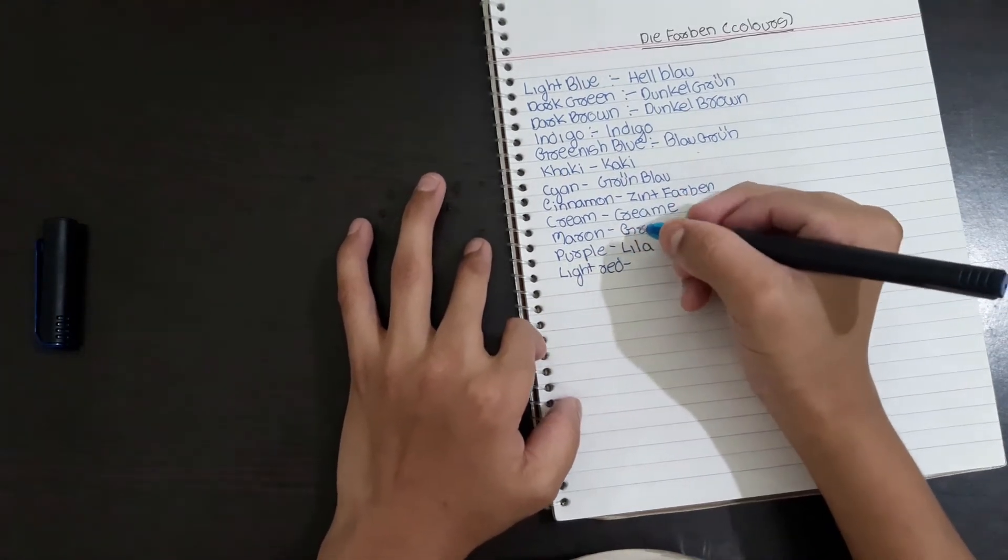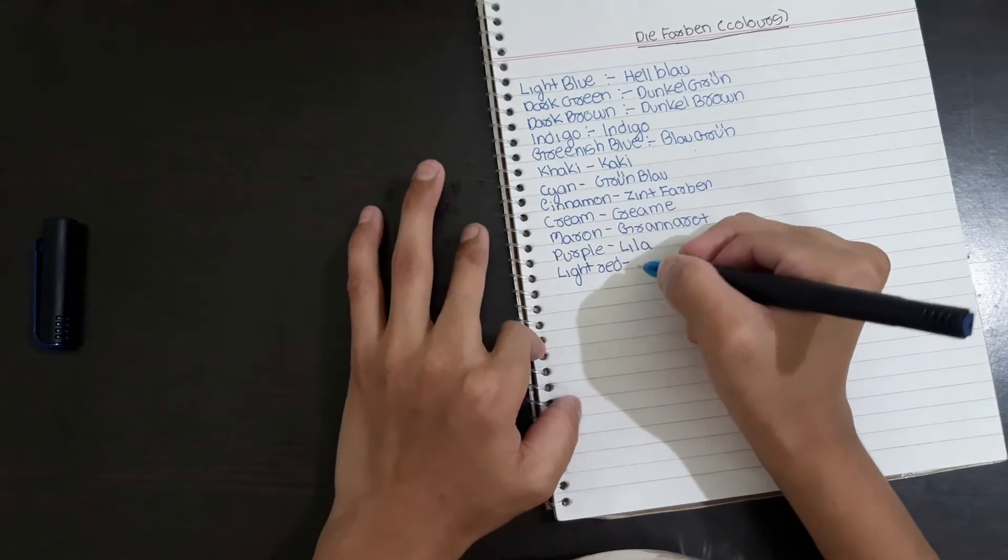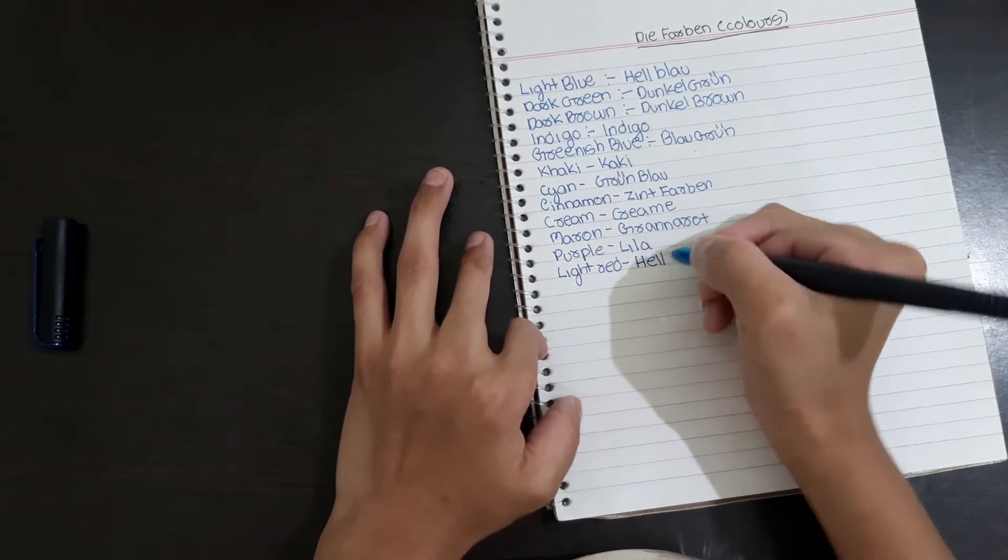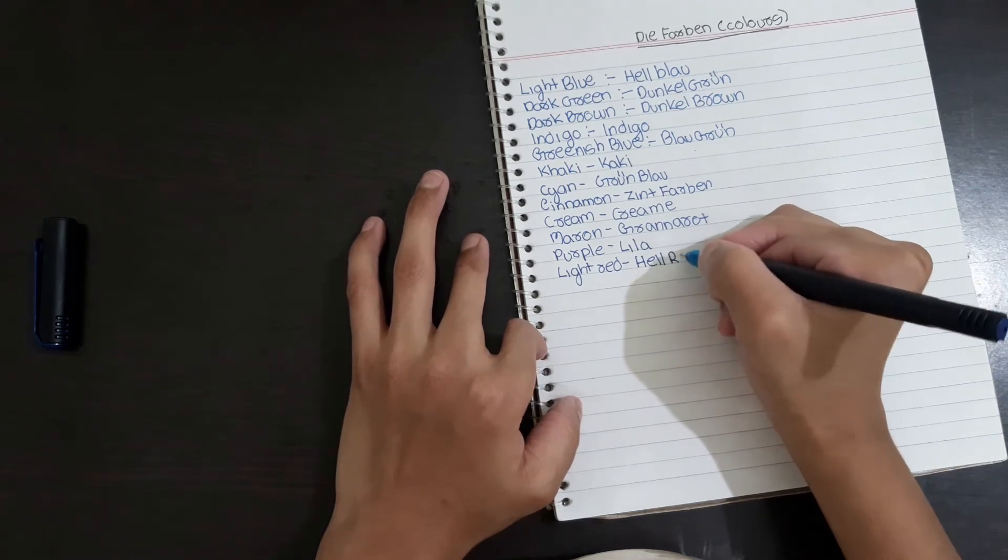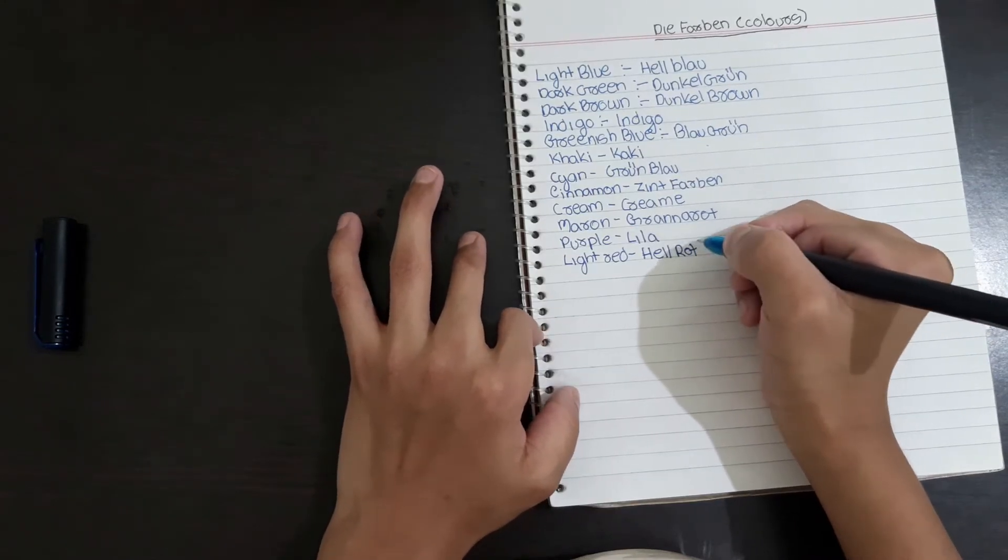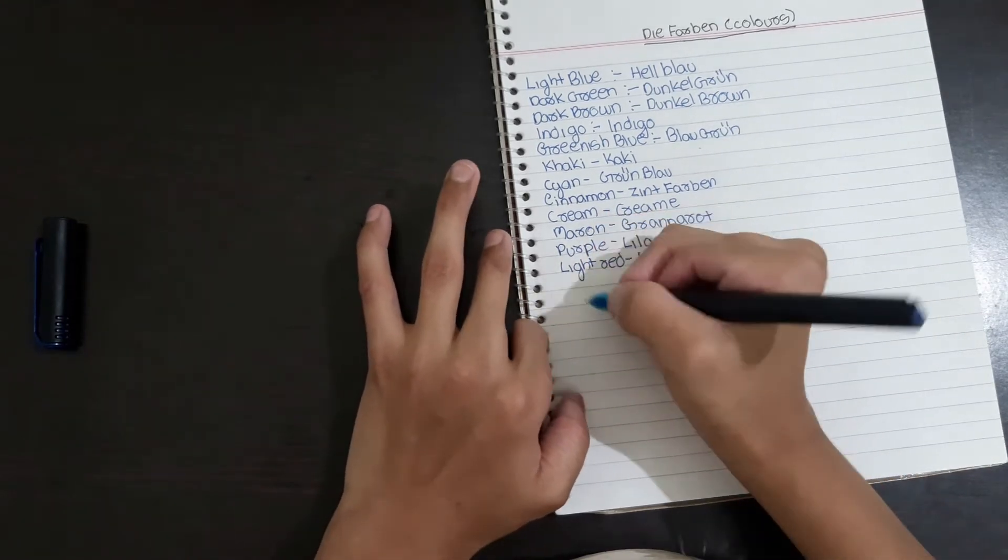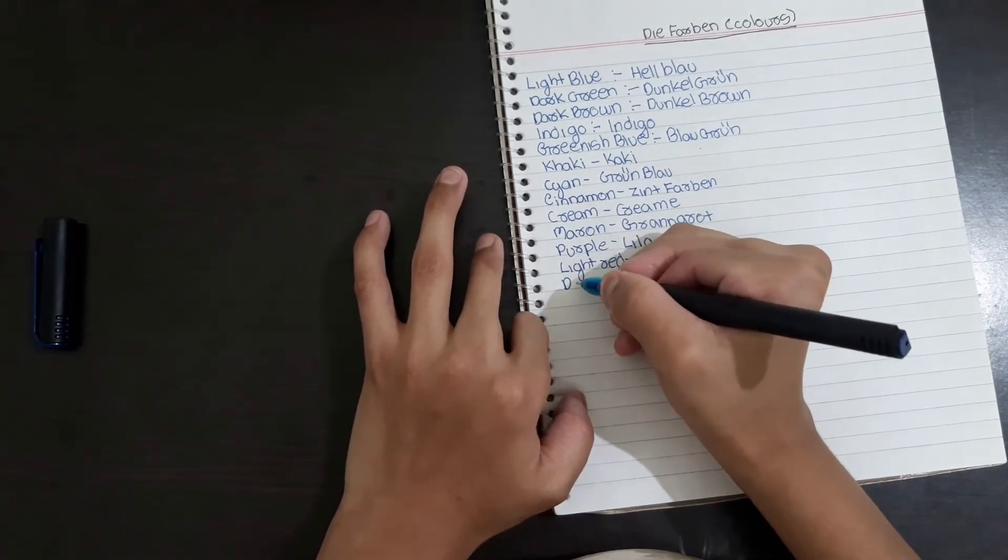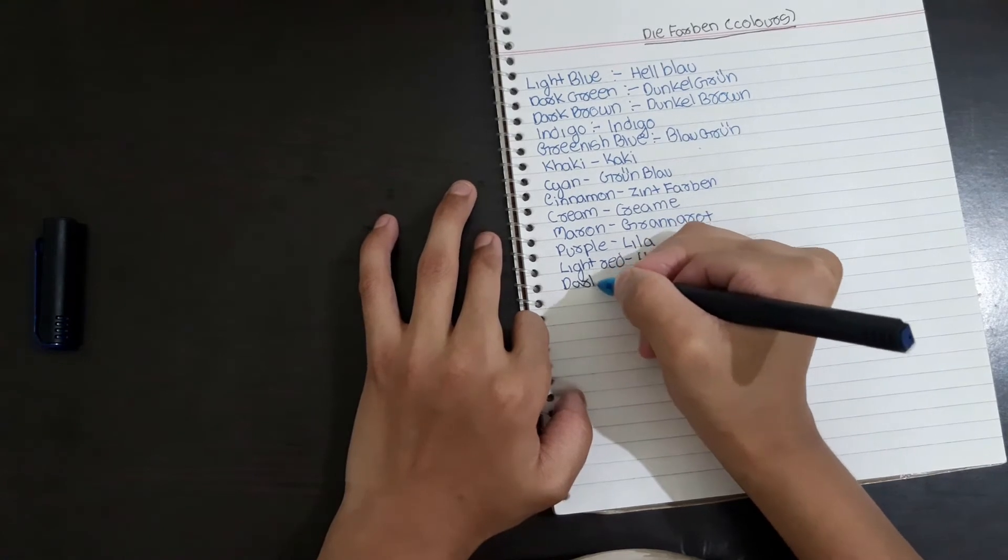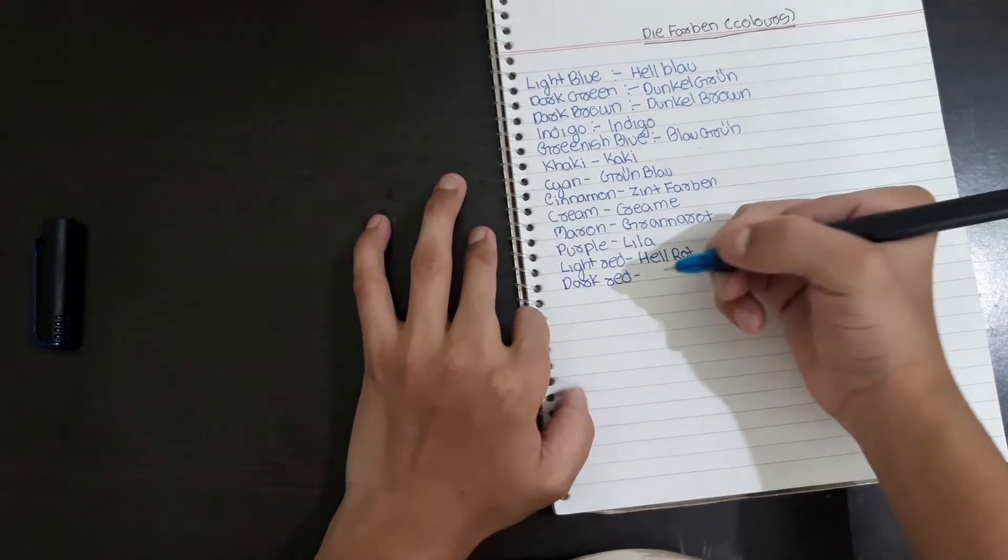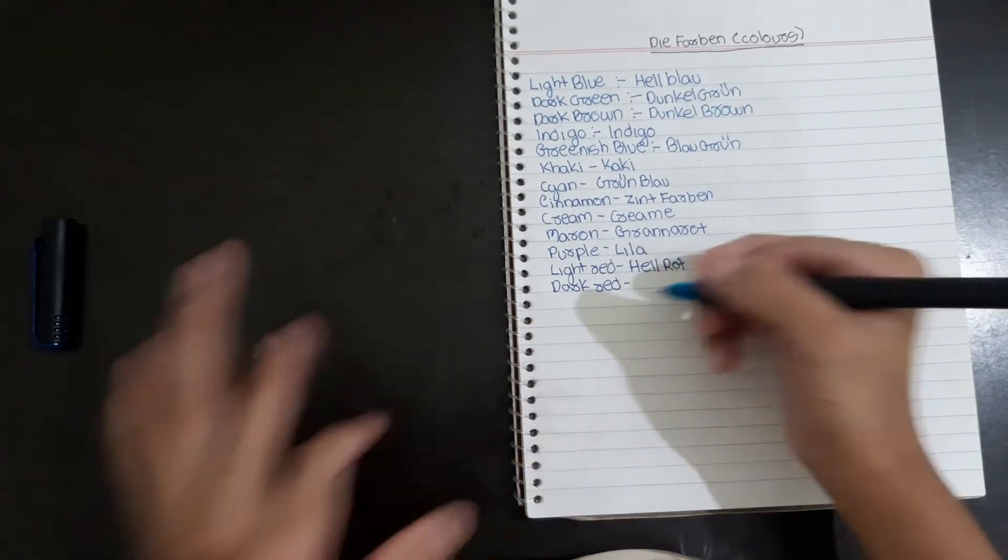Light red means Hellrot. And dark red means Dunkelrot.